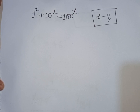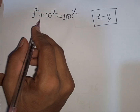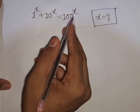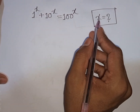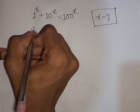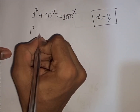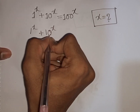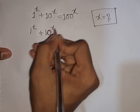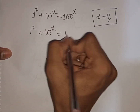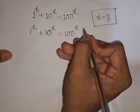How to solve 1 power x plus 10 power x is equal to 100 power x. Find the value of x. So we have 1 power x plus 10 power x is equal to 100 power x.